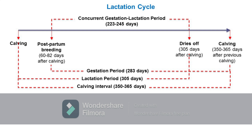Within the cycle is the period of concurrent gestation and lactation. It is during this period that the cow is producing milk while at the same time is pregnant. This takes about 223 to 245 days.